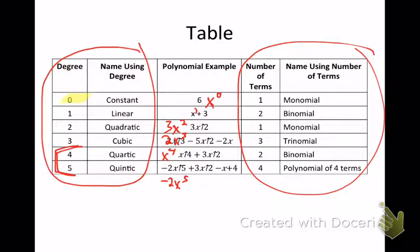Now, here are the terms. If there is one term, we call that a monomial. Two terms — binomial. Three terms — trinomial. Anything more than three is just a polynomial of that many terms. So if I have seven terms, I would say polynomial of seven terms. Anything after three doesn't have a special name — you just say polynomial.